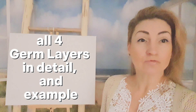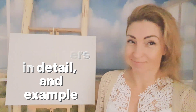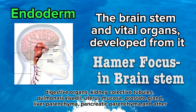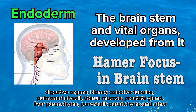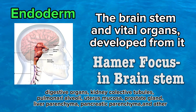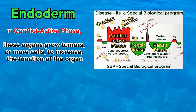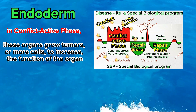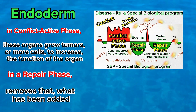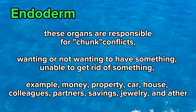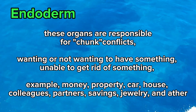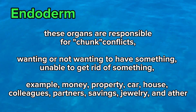We will go through all four germ layers in detail with examples. Endoderm in detail: the brain stem and vital organs developed from it — digestive organs, kidney collective tubules, pulmonary alveoli, uterus mucosa, prostate gland, liver parenchyma, pancreatic parenchyma, and others. In the conflict active phase, these organs grow tumors or more cells to increase the function of the organ. In the repair phase, it removes what has been added. These organs are responsible for chunk conflicts: wanting or not wanting to have something, and being able to get rid of something — for example, money, property, car, house, colleagues, partners, savings, jewelry, and others.